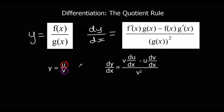This rule is given to us in the formula book in f and g notation. So that says when we have one function called f divided by another function g, we can use the quotient rule. And the quotient rule is v du/dx minus u dv/dx over v squared. In function notation, it's f differentiated times g minus f times g differentiated over g squared.